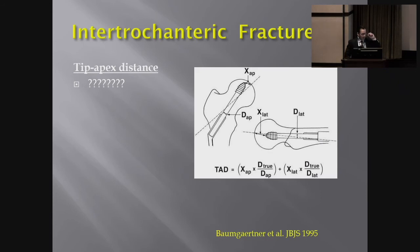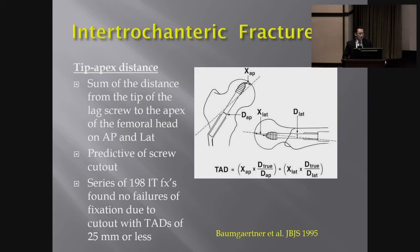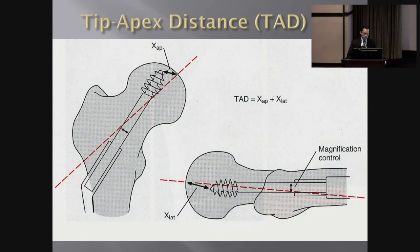A few words about the tip apex distance: the idea is that you want to get your screw centered in the femoral head and as close as possible to the area of strongest bone quality in the hip. As we age, the bone hollows out, so if you leave the screw too far or too high, the likelihood of the screw cutting out or collapsing becomes increased.